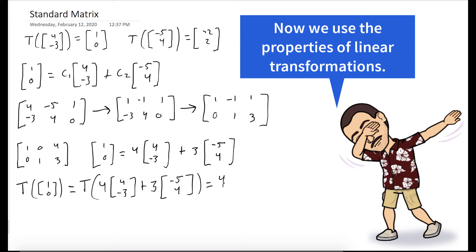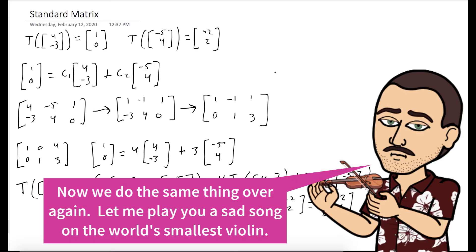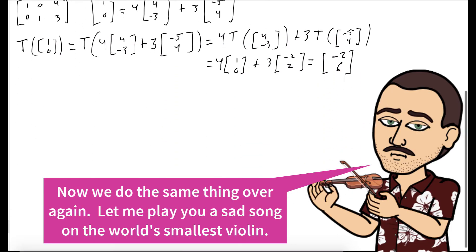Since T is a linear transformation, we can pull out the scalars and break apart the sum. We see that T of (1, 0) is 4 times (1, 0) plus 3 times (-2, 2), which equals (-2, 6).